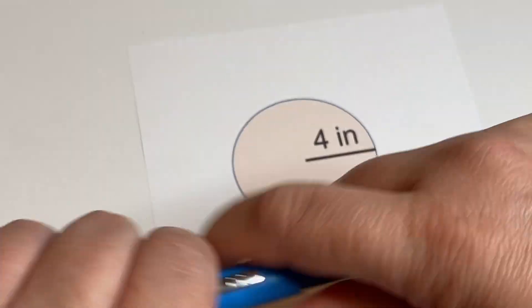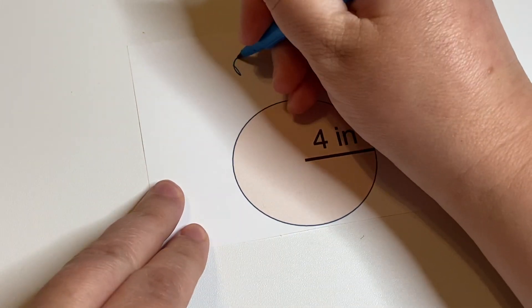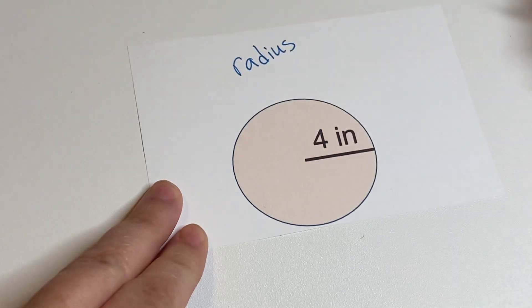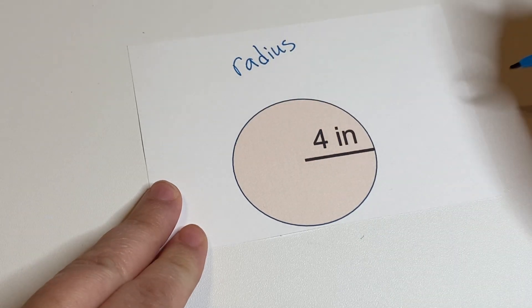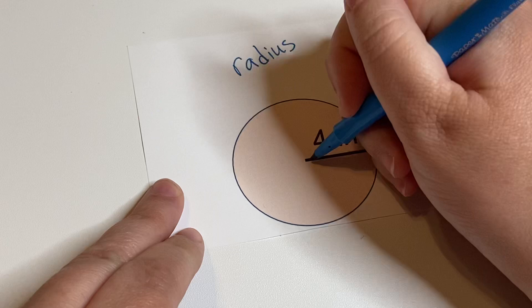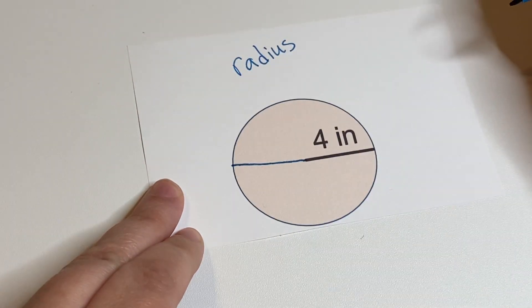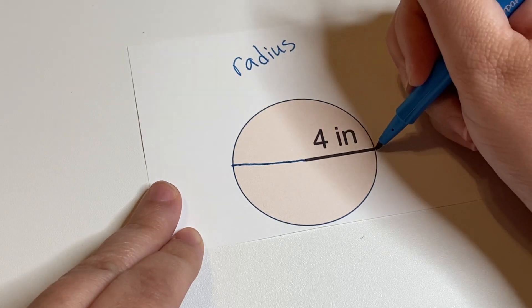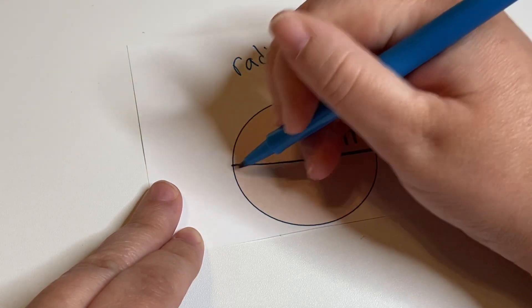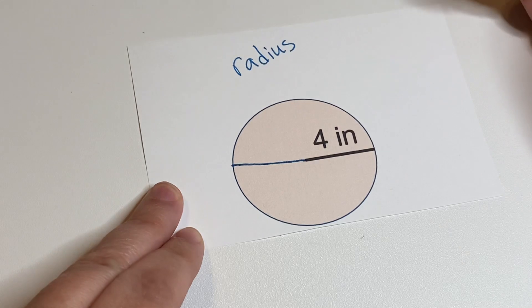So if we have the radius how would we find the diameter? Well the diameter would be this other half. So we know that you're gonna go four and then you're gonna go another four. So you're doubling it.